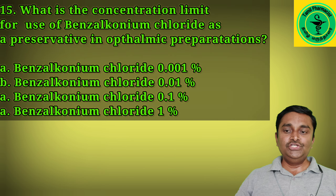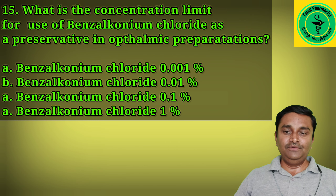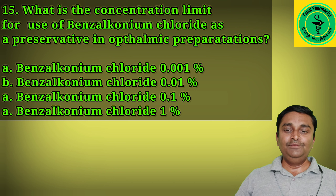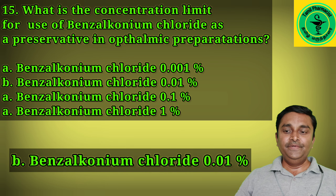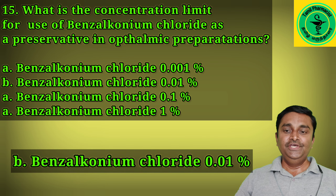Fifteenth question: what is the concentration limit for the use of benzalkonium chloride as a preservative in an ophthalmic product? In most ophthalmic formulations, benzalkonium chloride is used at a concentration of 0.01%.